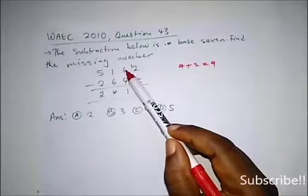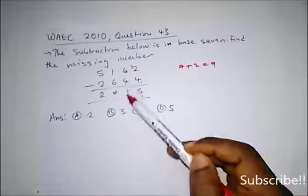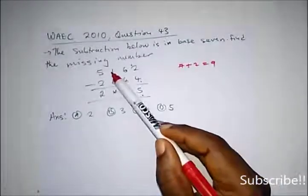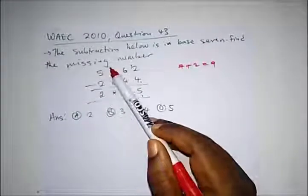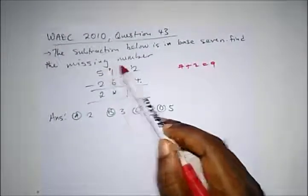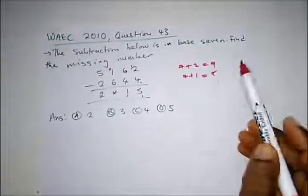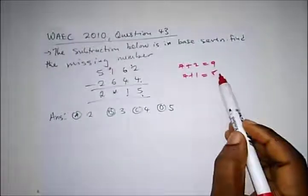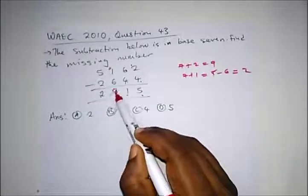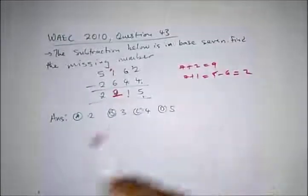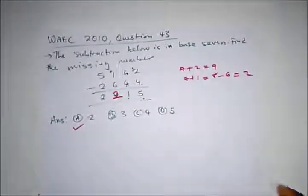We are left with 5, and 5 minus 4 is 1. Then 1 minus 6 is not possible, so we carry a 7. That gives us 7 plus 1 which is 8. So 8 minus 6 gives us 2. The answer here is 2, and our correct option is option A.